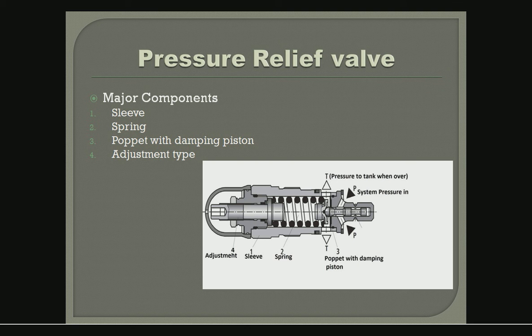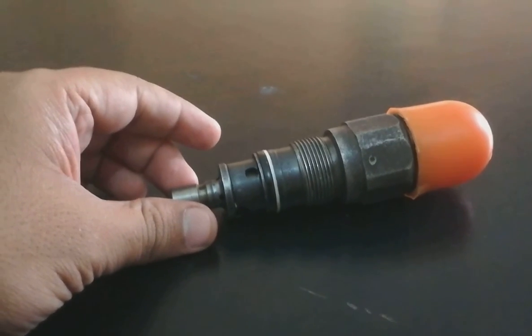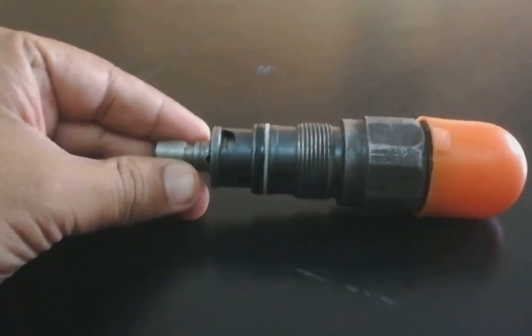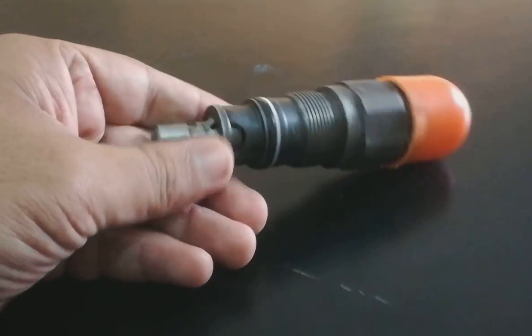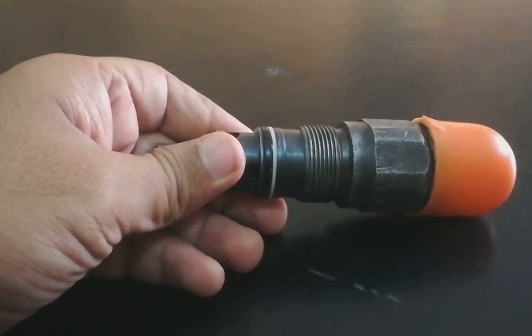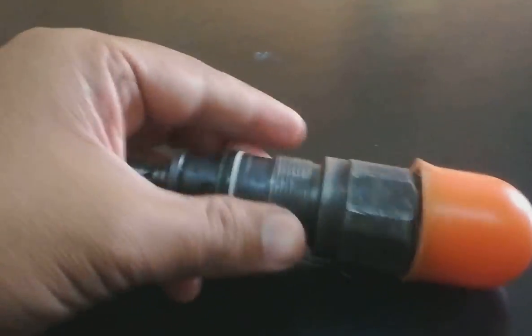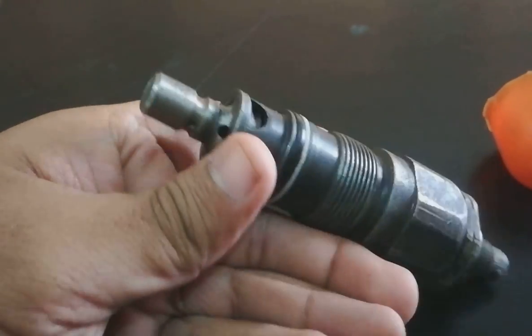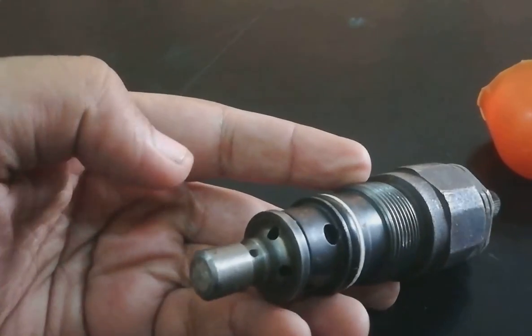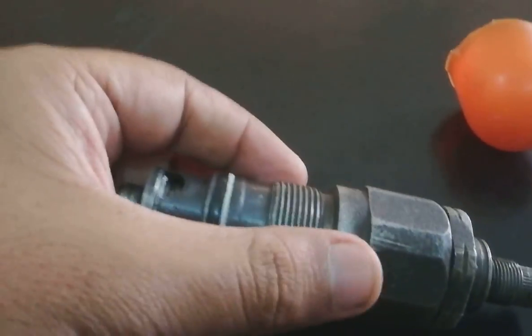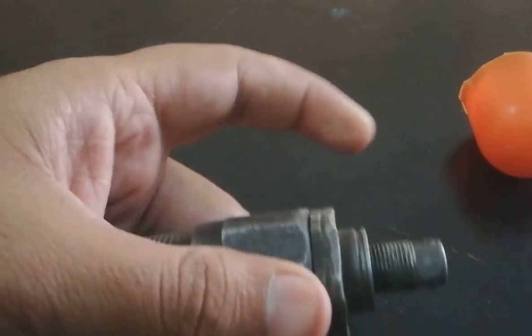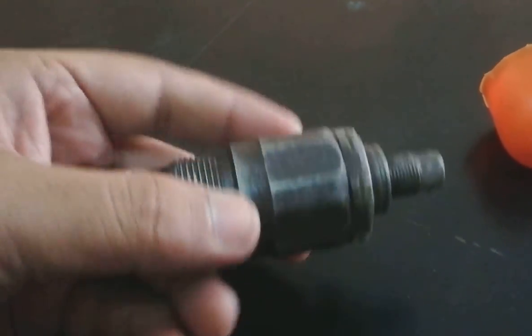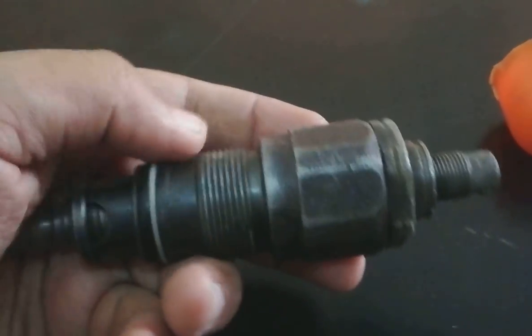On screen you are watching a direct acting pressure relief valve. It has four major components. We will remove the protection cap. The first component is the poppet valve. The second is the sleeve. The third is the adjustment. And the fourth is the spring, which is inside the sleeve.